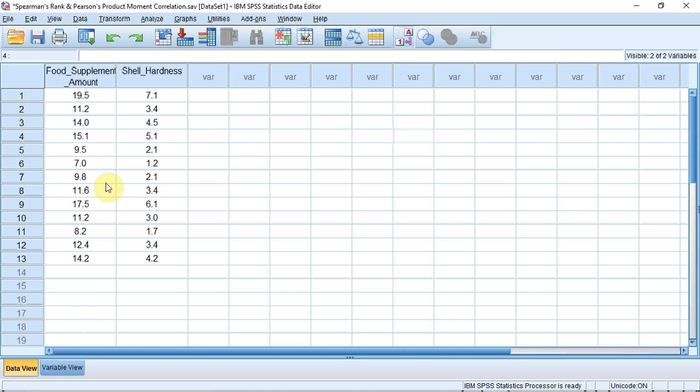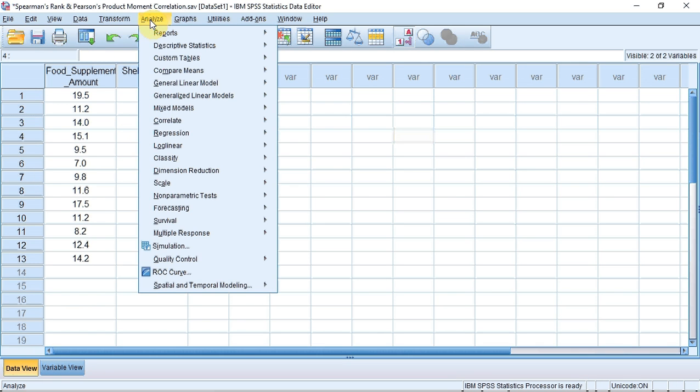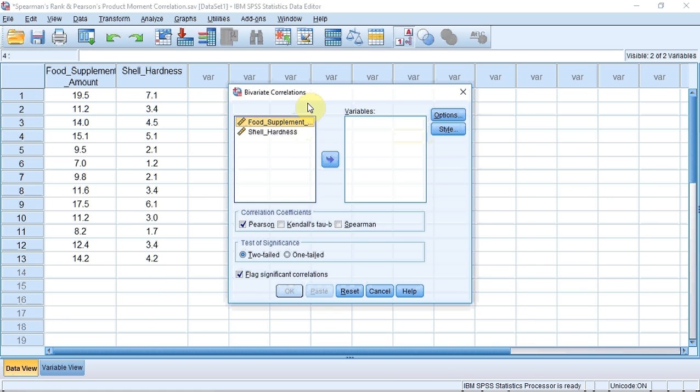We can perform both tests at the same time as follows. Track up to the Analyze menu and click to reveal a drop down menu. Track down to Correlate and click Bivariate on the menu sublist that appears. A window should open that looks like this.